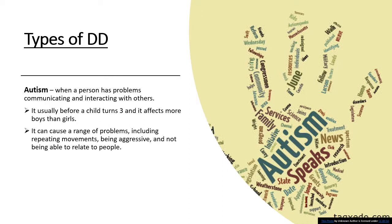The types of developmental disability include autism, which is when a person has problems communicating and interacting with others. It usually appears before a child turns three and affects more boys than girls. It can cause a range of problems including repeating movements, being aggressive, and not being able to relate to people.